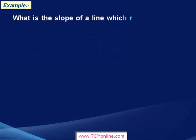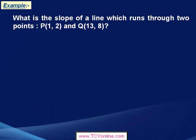Now, let's look at this example. Here, we need to find the slope of a line which runs through point P having coordinates 1, 2 and point Q having coordinates 13, 8.